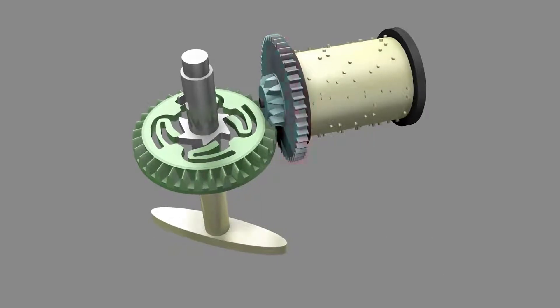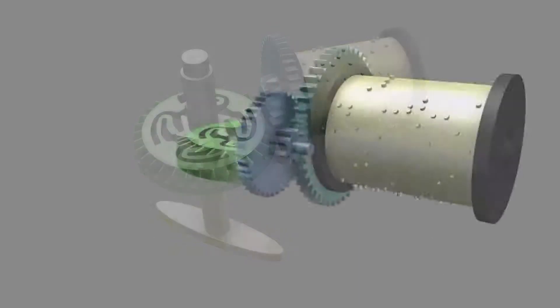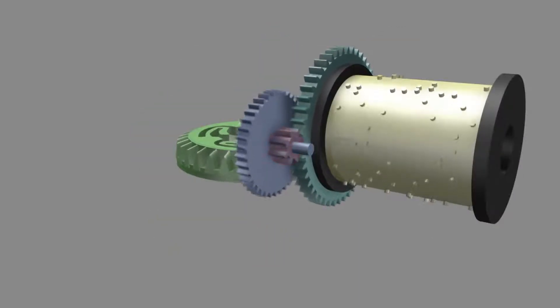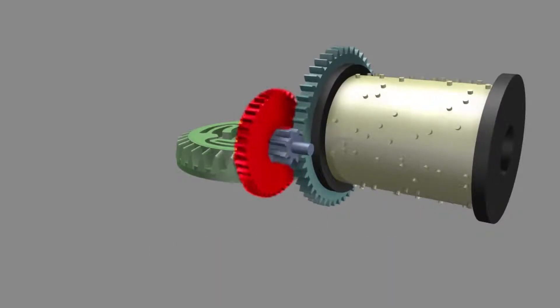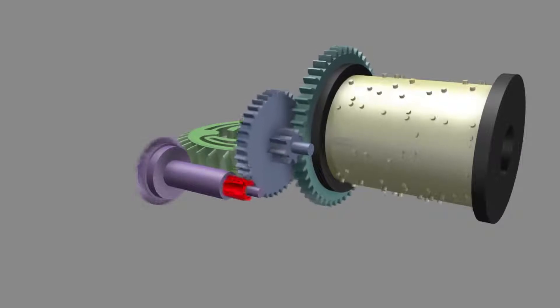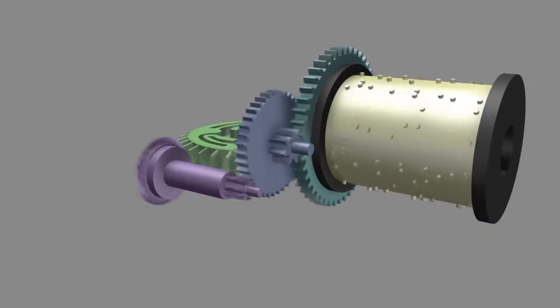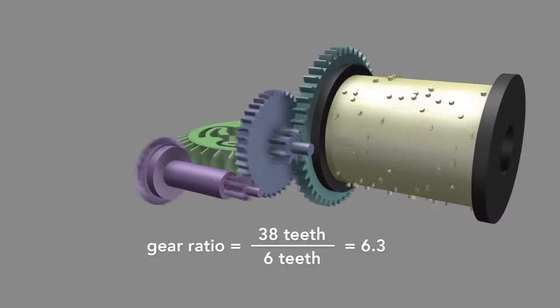The drum is also affixed to a larger gear, which engages another smaller gear, this time multiplying the rotational speed by 5.75 times. The larger gear on this piece engages the smaller end of another spur gear, further multiplying the rate by 6.3 times.